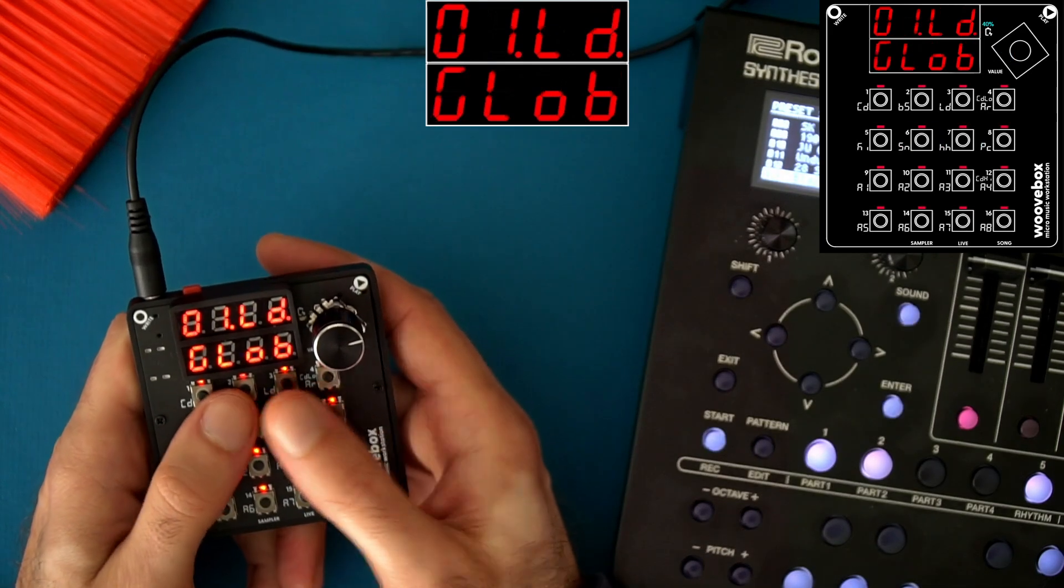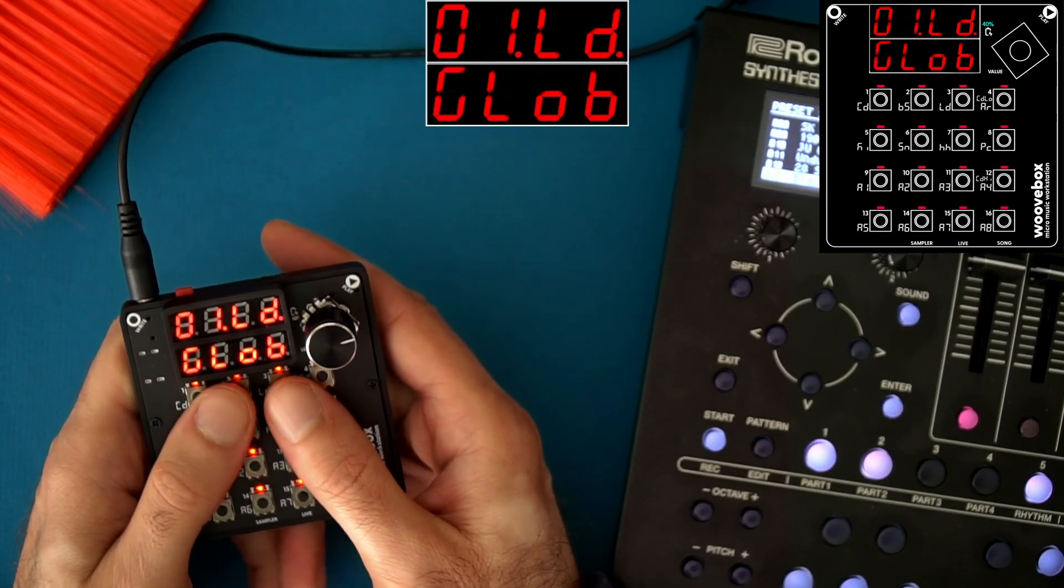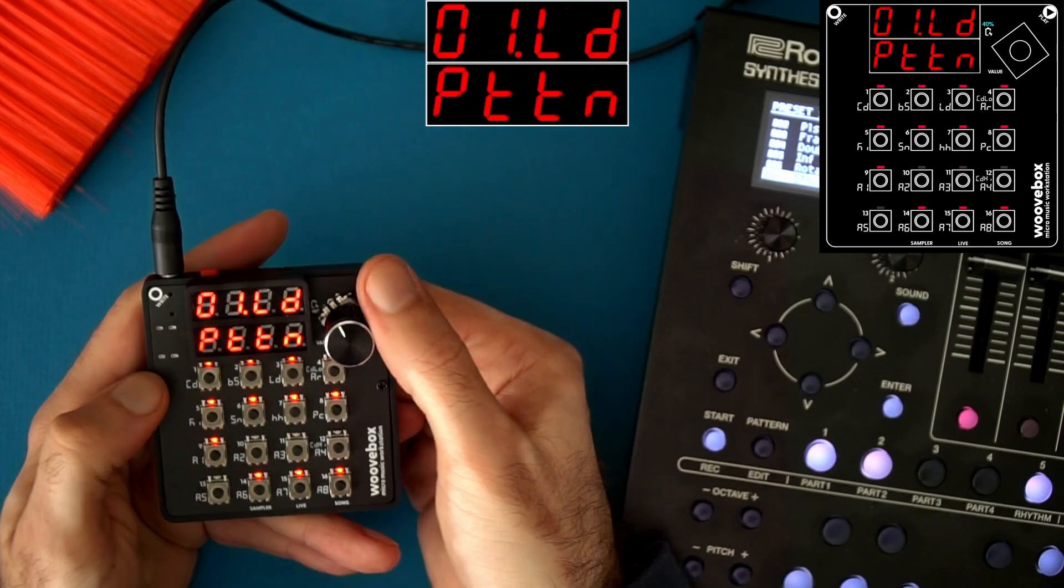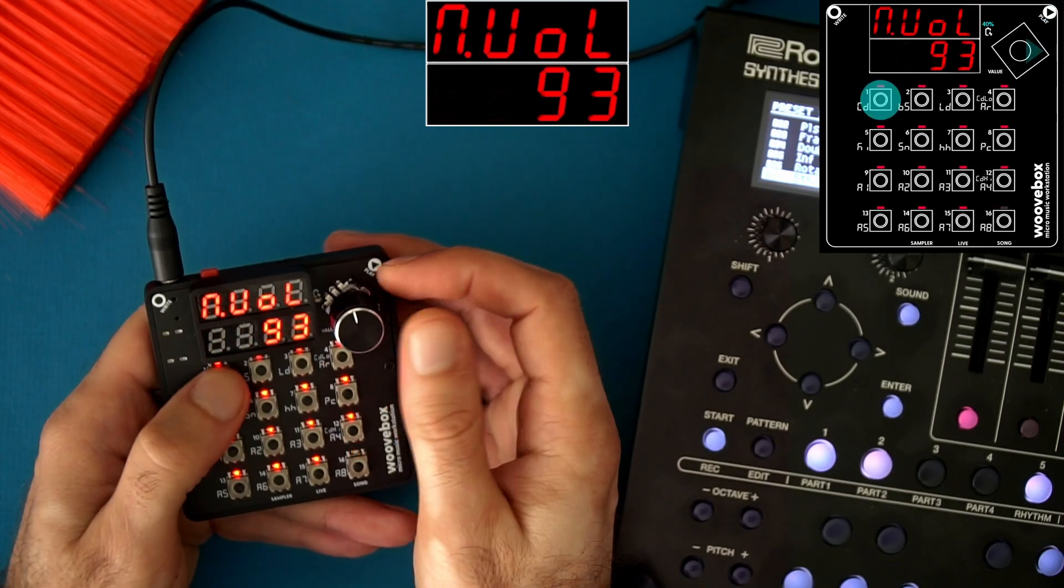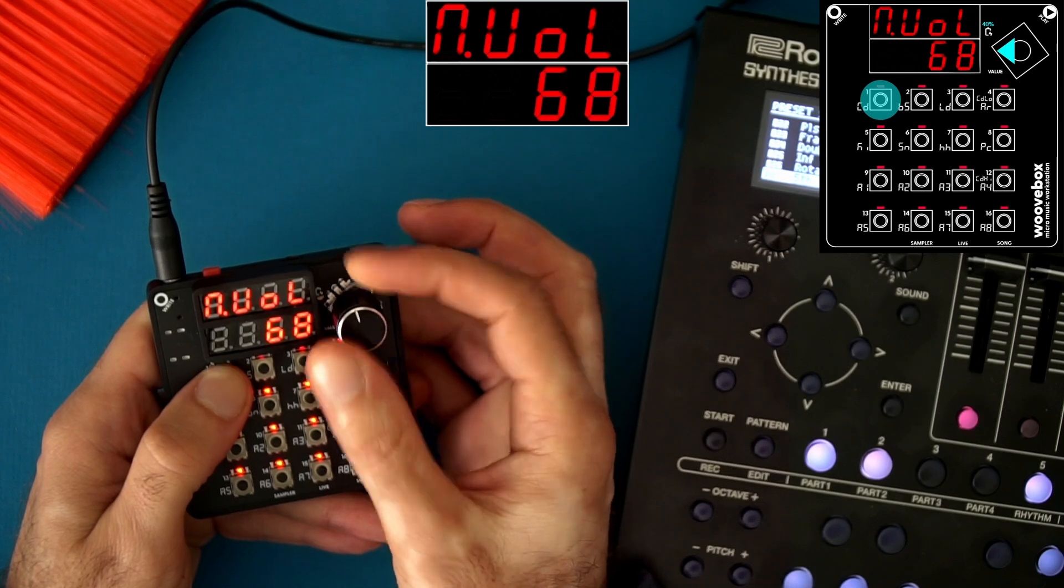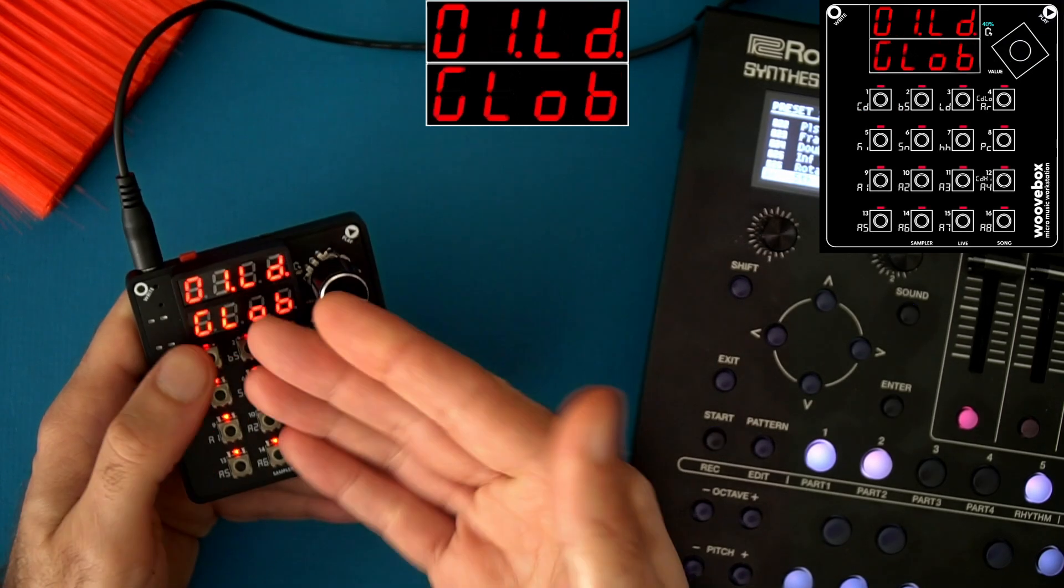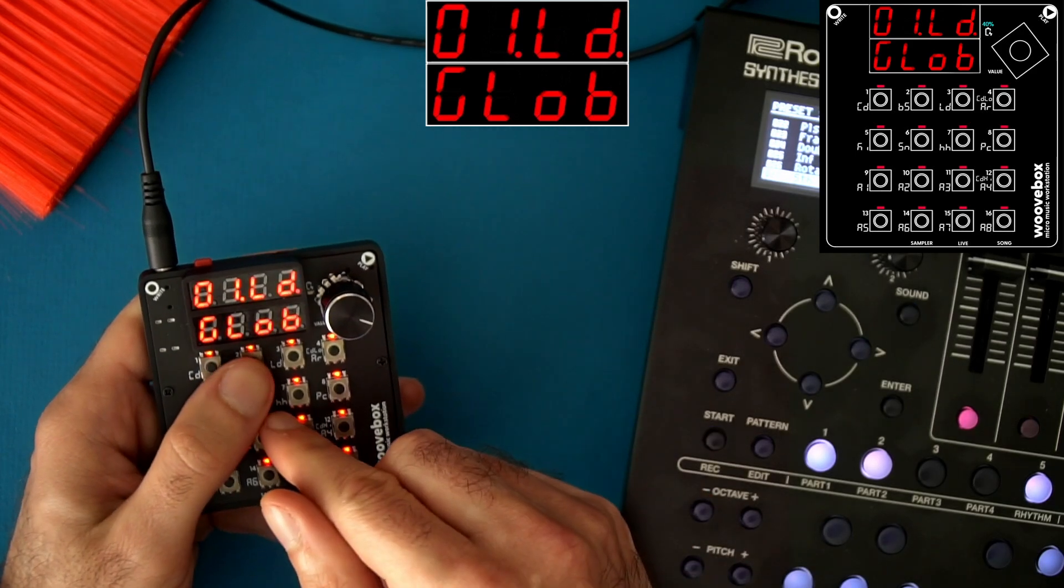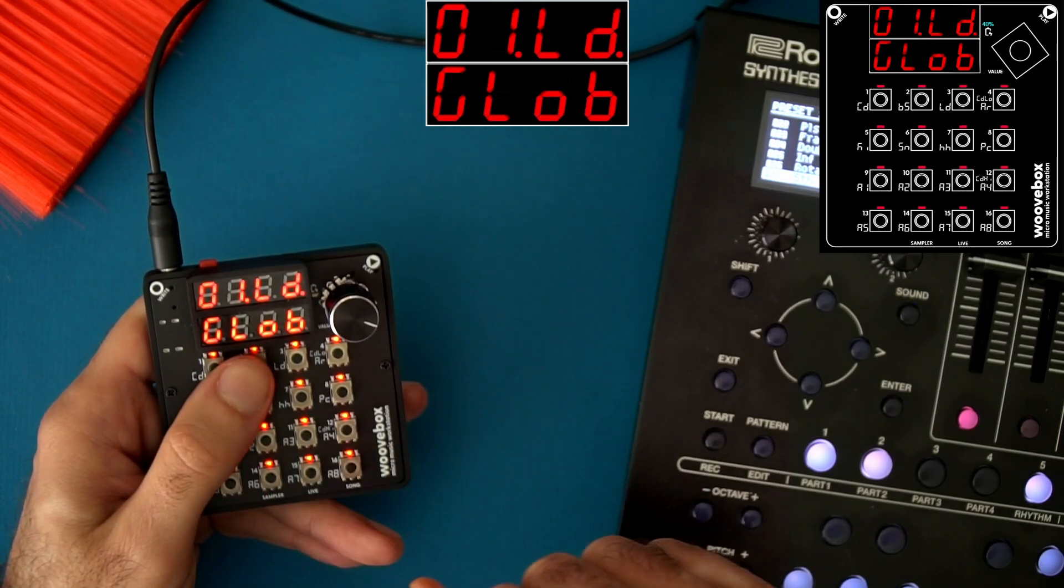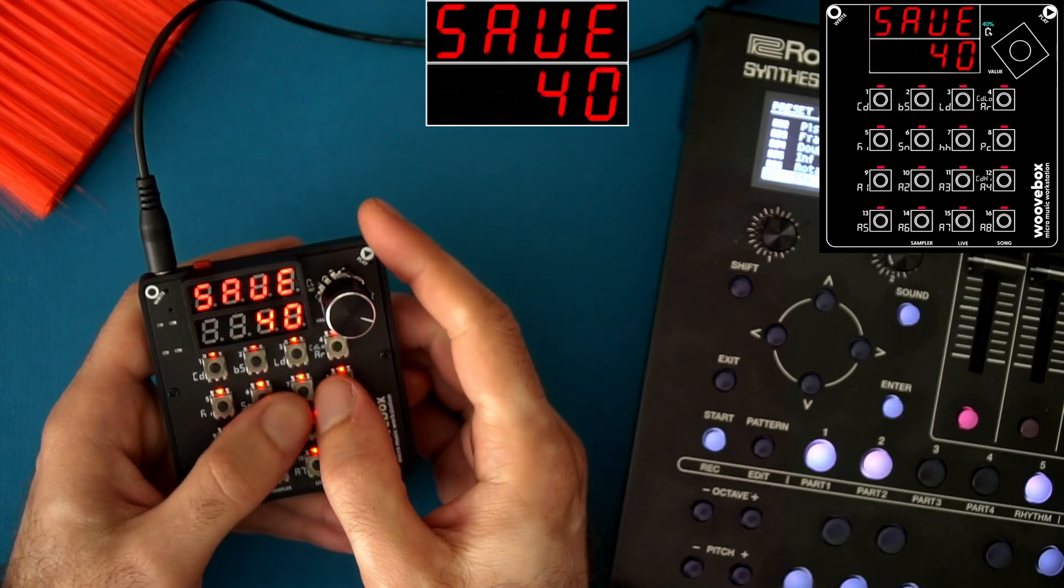So with the SH-40, the volume, filter, resonance, and panning control work. So that's pretty cool. I'm going to go to the volume. Very cool. And that means you can actually use the Woofbox volume automation in song mode or live mode to affect your external synth, which is very cool.